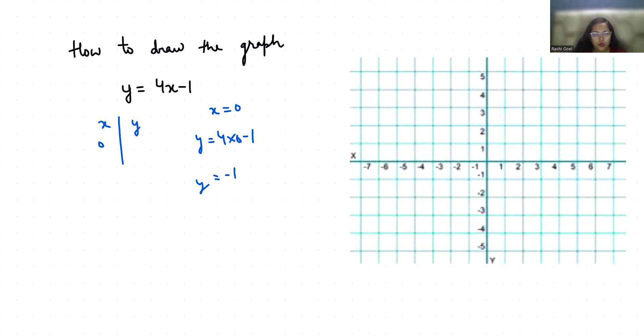When x = 1, y = 4 times 1 minus 1. That is 4 minus 1. That is 3. When x is 1, y is 3.